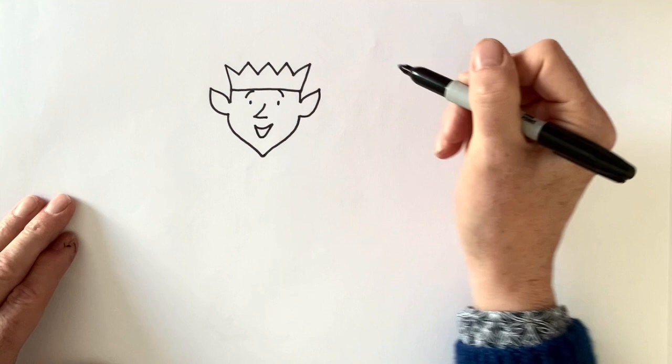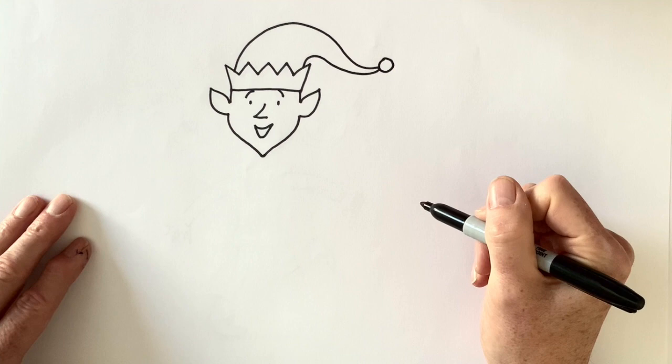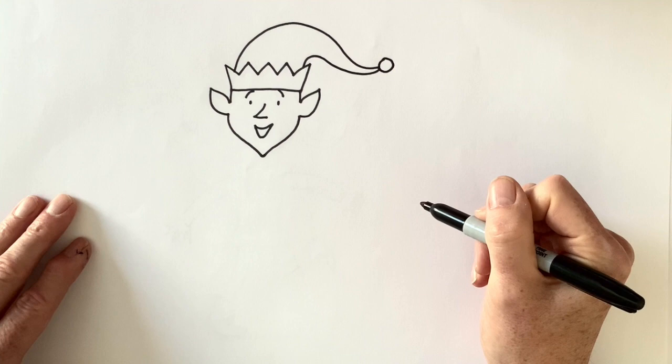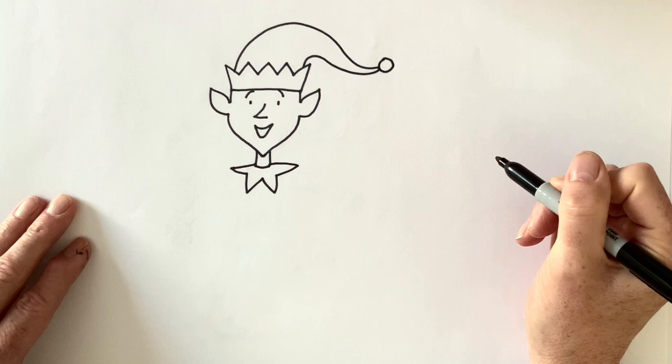Let's finish off that hat because he looks like a king at the moment. But if we add a bit like that, that turns him into an elf, doesn't it? A bobble on the end, a neck and special collar which is made out of pointy bits like that.